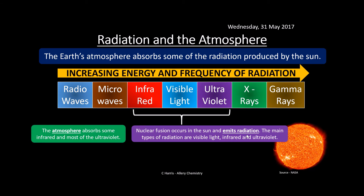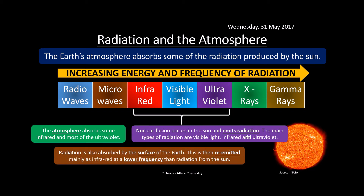The atmosphere absorbs some of this infrared and most of the ultraviolet as we've seen. Radiation is also absorbed by the surface of the Earth and then re-emitted back as infrared at a lower frequency, causing warming of the Earth. At night a lot of that heat starts to escape, but during the day the Earth absorbs some of that heat and radiation, then radiates it back at a lower frequency as infrared.